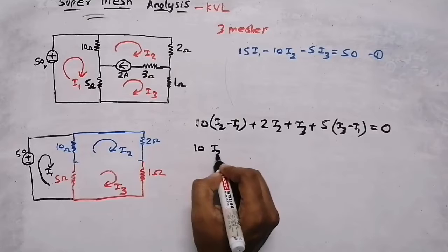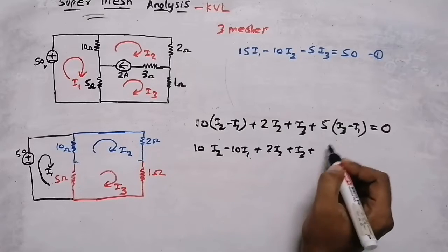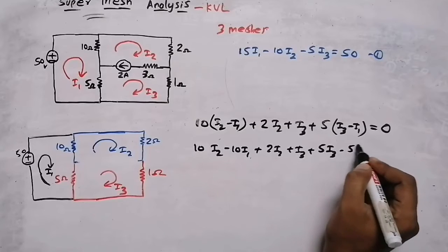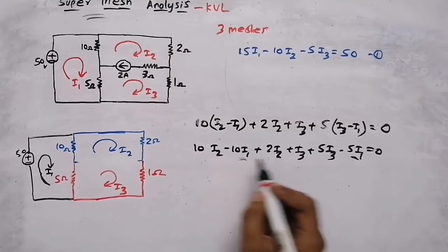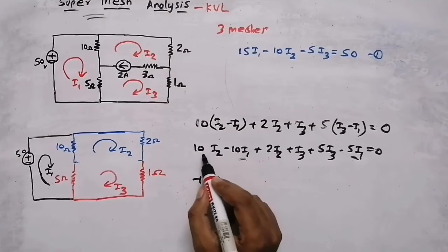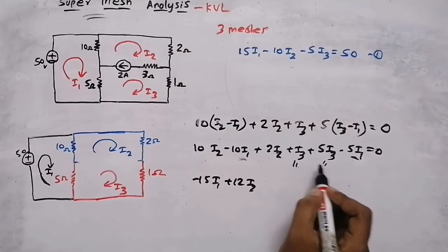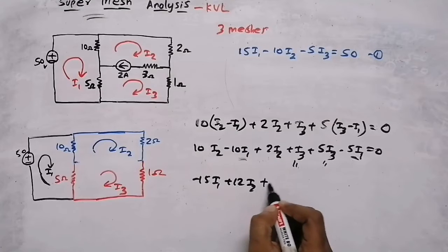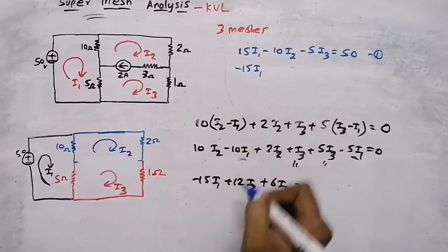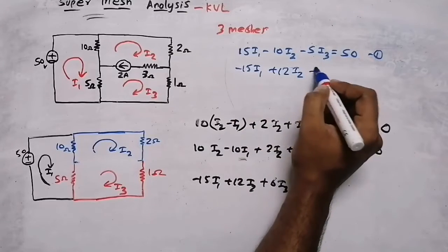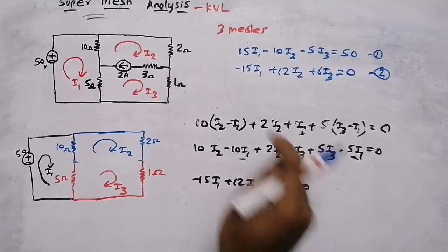Opening the brackets: 10i2 minus 10i1 plus 2i2 plus i3 plus 5i3 minus 5i1 equals 0. Collecting terms: minus 10 minus 5 gives minus 15i1; 10 plus 2 gives 12i2; 1 plus 5 gives 6i3. So the second equation is: minus 15i1 plus 12i2 plus 6i3 equals 0.